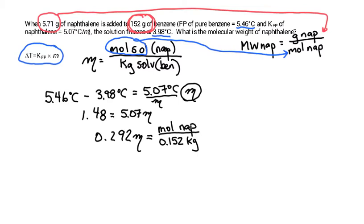So in order to solve for moles of the naphthalene, we multiply both sides by 0.152. And we're left with 0.0447 equals moles of naphthalene.